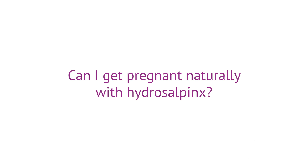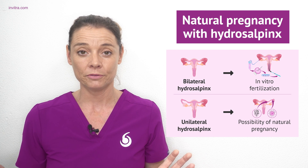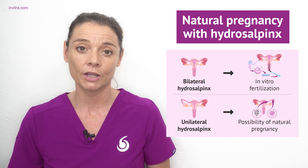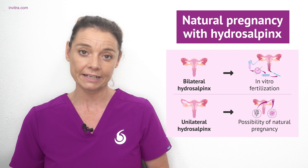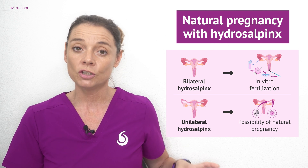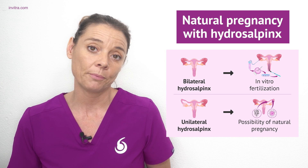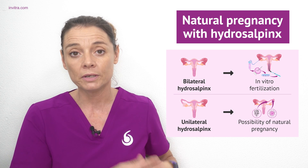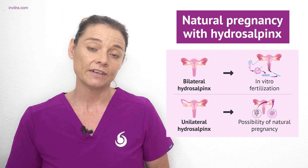Can I get pregnant naturally with hydrosalpinx? The answer will depend on whether your hydrosalpinx is unilateral or bilateral. If the hydrosalpinx is bilateral it is almost impossible for a natural conception to occur and you will have to resort to assisted reproduction techniques such as IVF. If the hydrosalpinx is unilateral and the other fallopian tube is in good working order, then it may be possible to get pregnant naturally; however, you must treat the hydrosalpinx in the other tube to make sure that the accumulated liquid doesn't affect the chances of fertilization and implantation of any developing embryos.